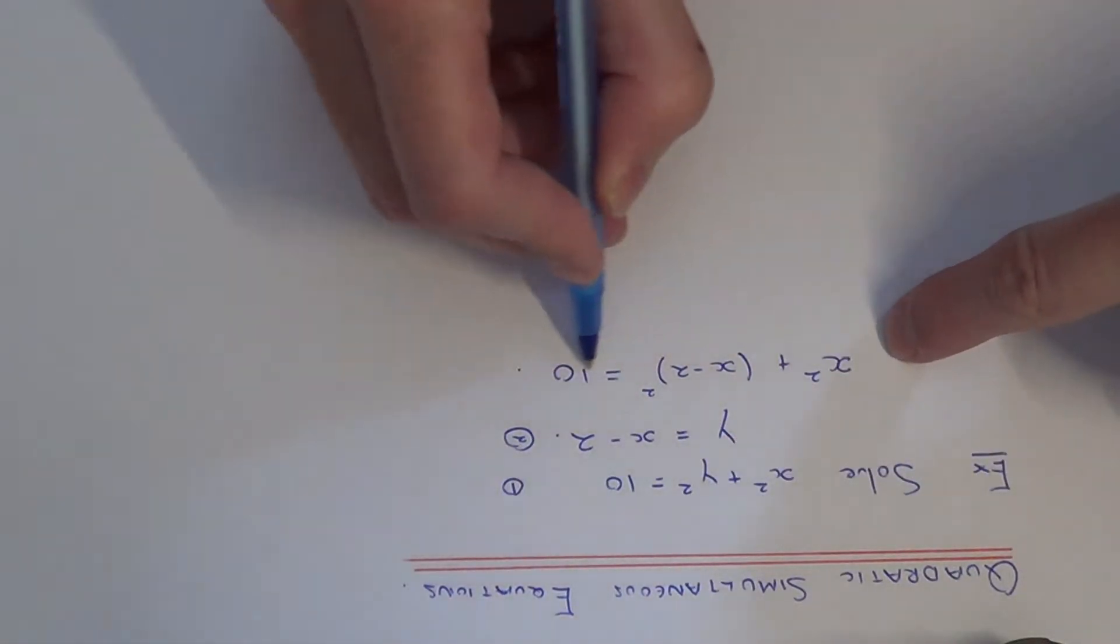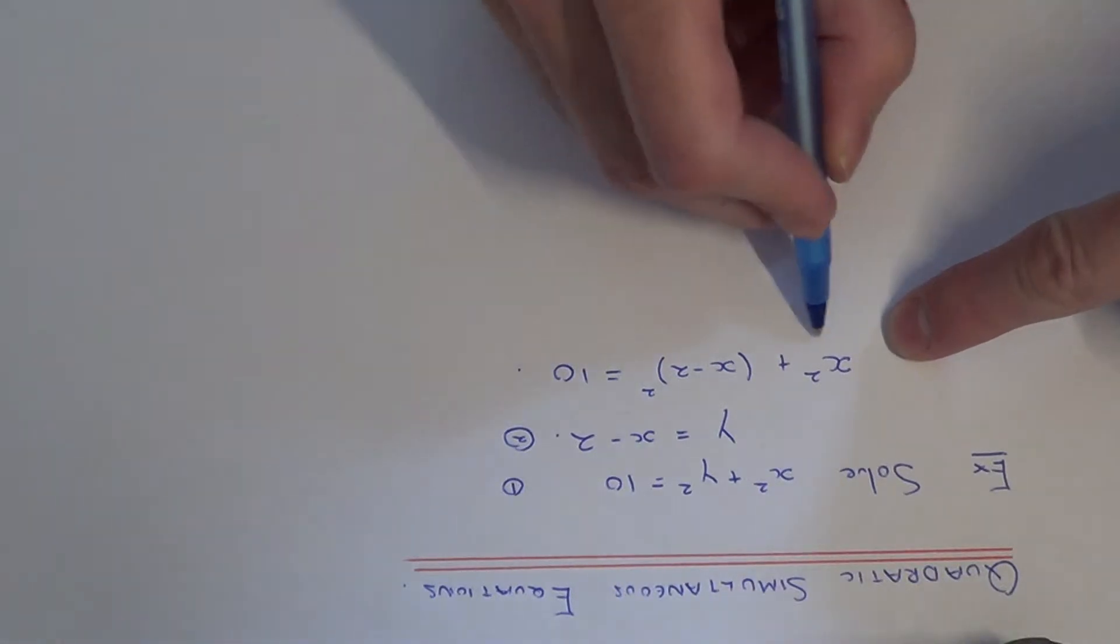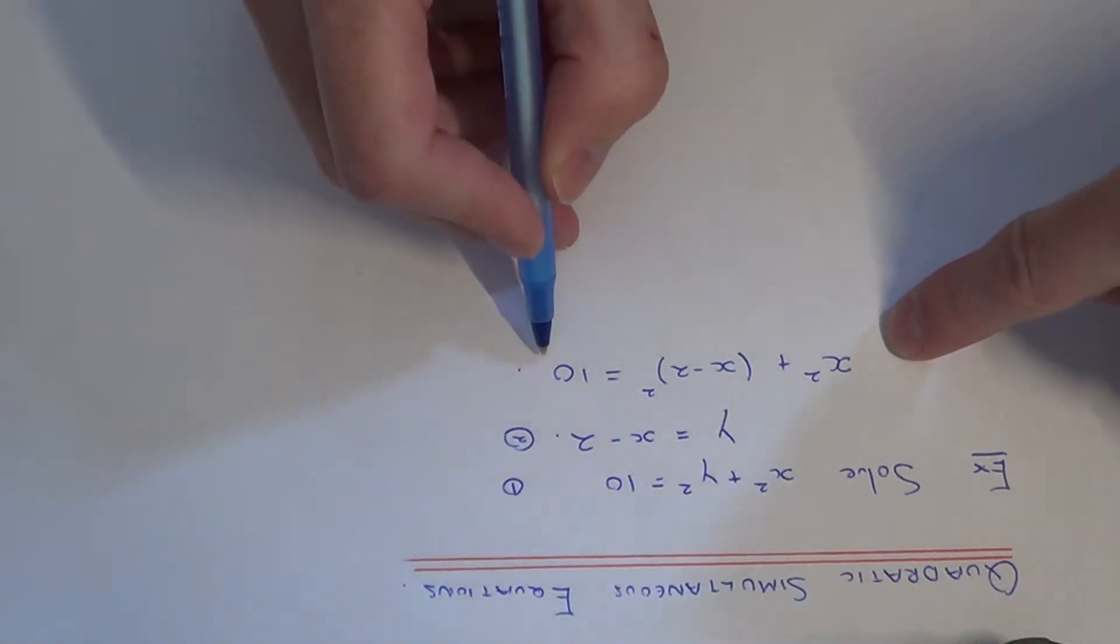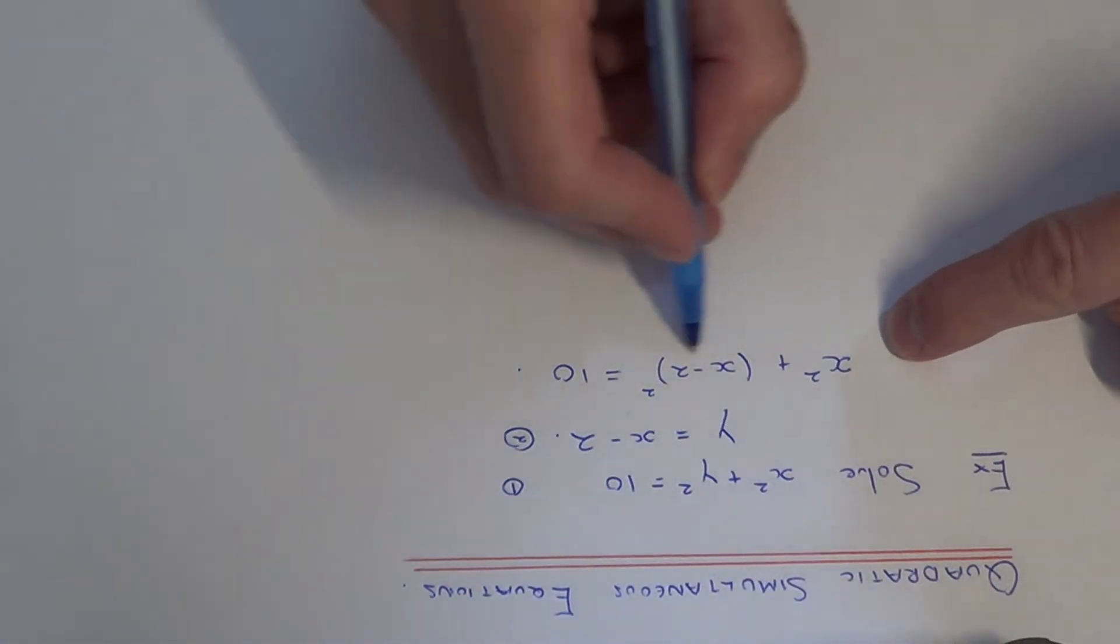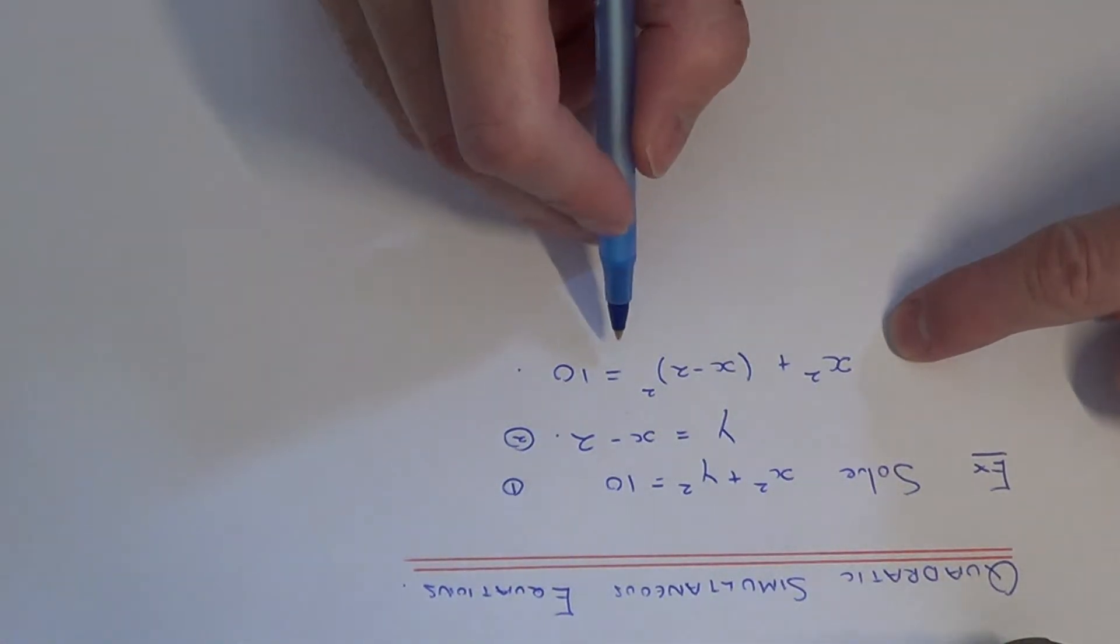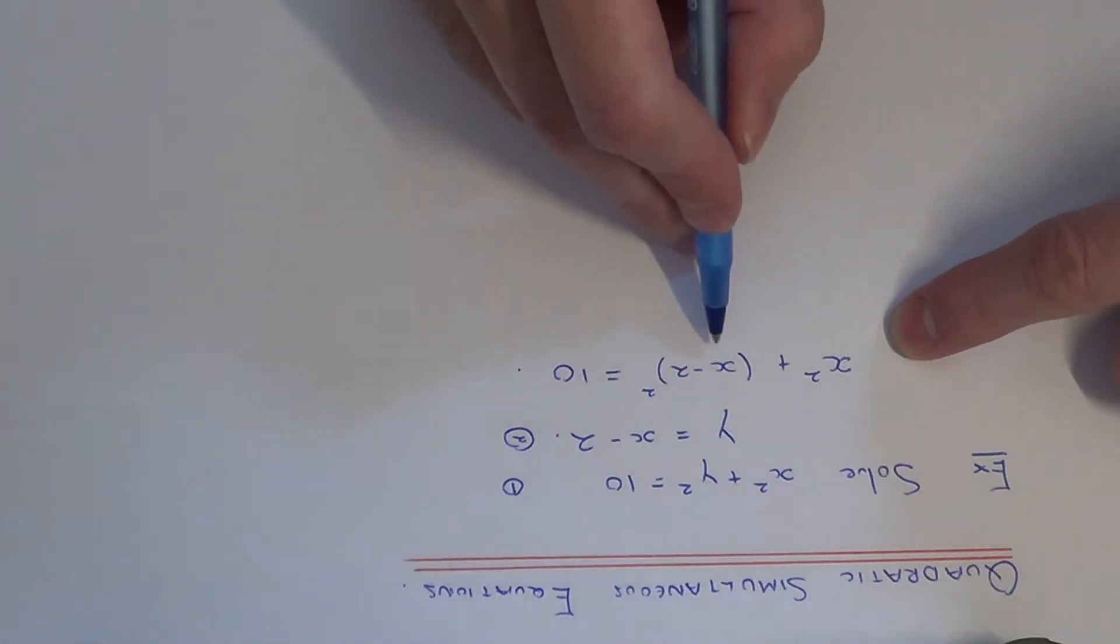So if you notice, what we've ended up with is an equation just involving x. So we just need to now solve this equation here. But before we can do this, we need to expand the bracket and we need to simplify.